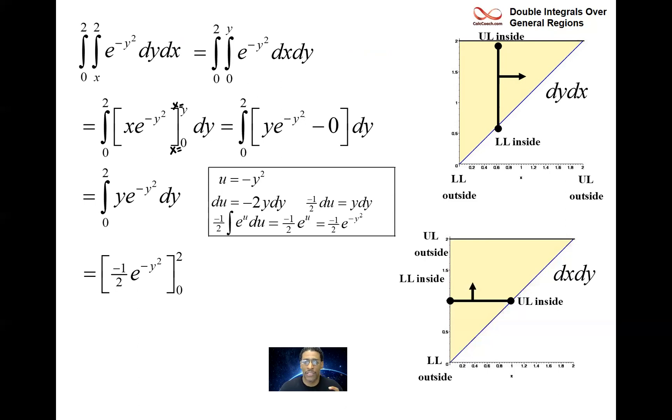Change the order of integration because the integrand dictated it to you. Put a two in you get e to negative four. Put a zero in you get e to zero who's a one. Keep the negative one half outside. There you did it.